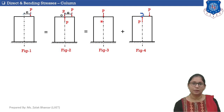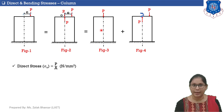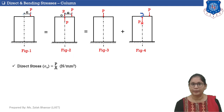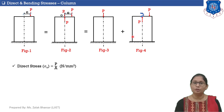Whenever a column section is subjected to axial load, direct stresses will be developed. The direct stresses developed due to axial load as in figure 3 are equal to P/A. In figure 4, the upward-acting load P passing through the axis of the member and the eccentric load form a couple. This means in figure 4 the column section is subjected to a bending moment, and due to this bending moment, bending stresses are generated.